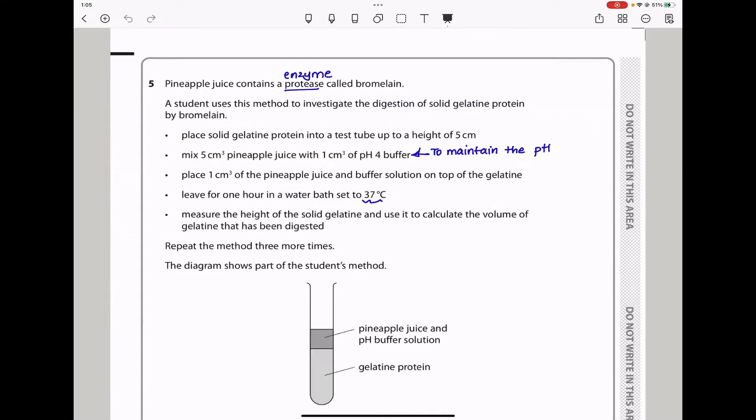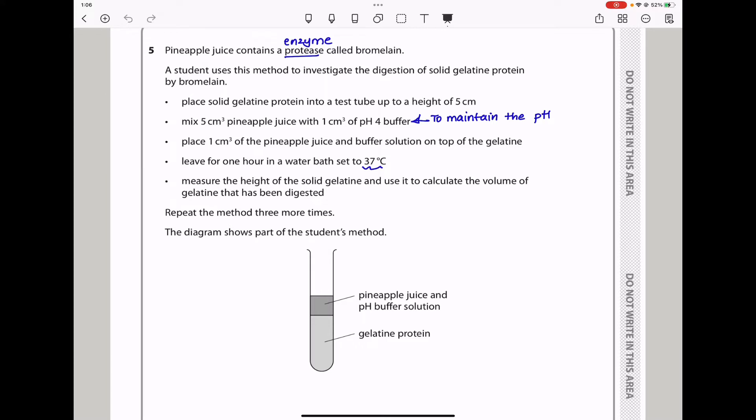Let's continue to question five. Pineapple juice contains a protease called bromelain. A student uses this method to investigate the digestion of solid gelatin protein by bromelain. They place solid gelatin protein into a test tube up to a height of 5 centimeters. Then they mix 5 centimeters cubed of pineapple juice with 1 centimeter cubed of pH 4 buffer. They place 1 centimeter cubed of pineapple juice and the buffer solution on top of the gelatin. Then, they leave for an hour in a water bath stayed at 37 degrees. They measure the height of the solid gelatin and use it to calculate the volume of gelatin that has been digested. This experiment is repeated three more times.